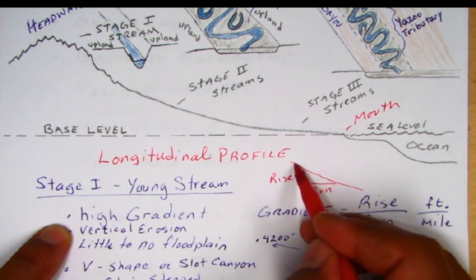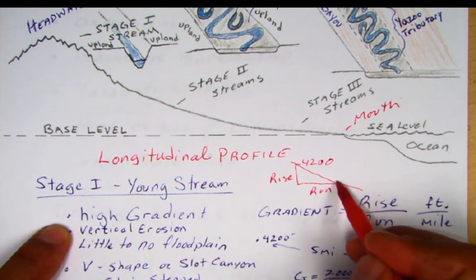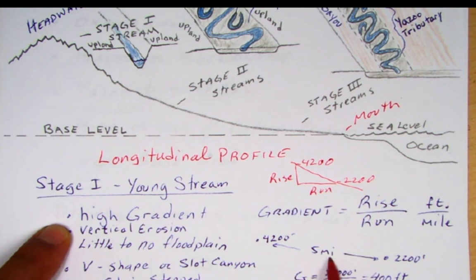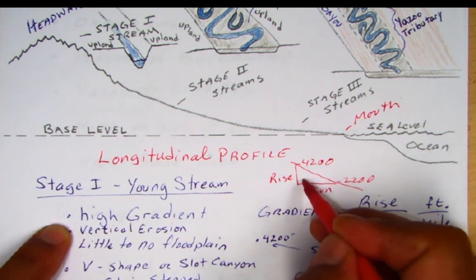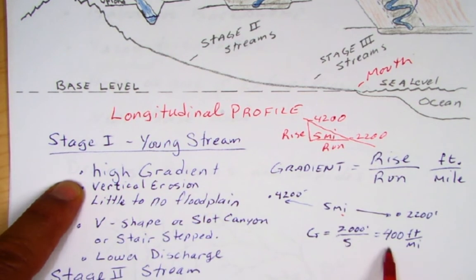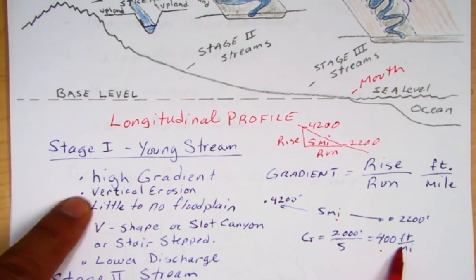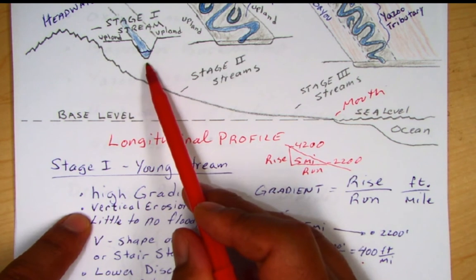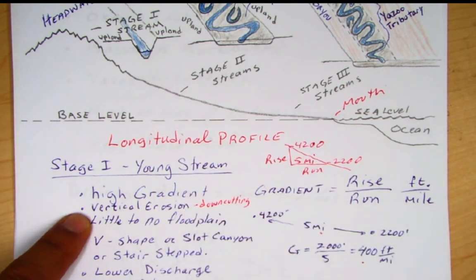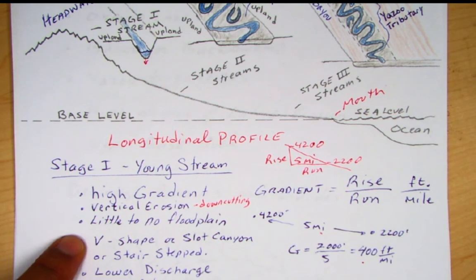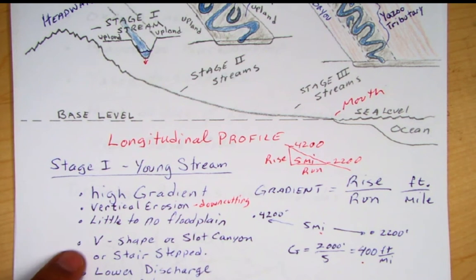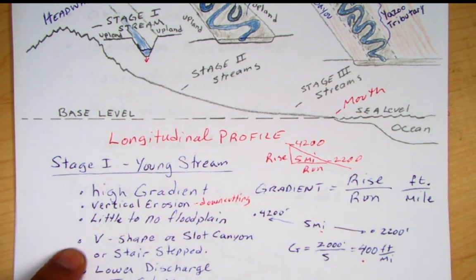For example, if a point is at 4,200 feet elevation and another is at 2,200 feet, with five miles between them, the gradient is 400 feet per mile — meaning for every mile you move along the stream, you're dropping 400 feet. Stage one young streams have higher vertical erosion meaning more down cutting, little to no floodplains, and are primarily more straight with V-shaped valleys. Sometimes you may see a slot canyon or stair-step canyon, depending on the rock type.